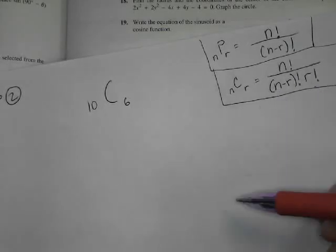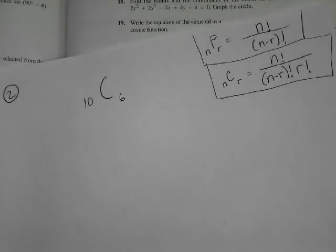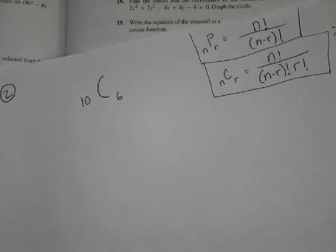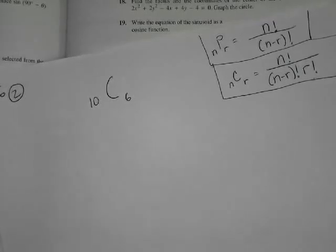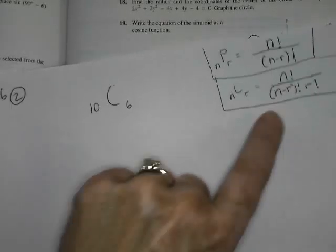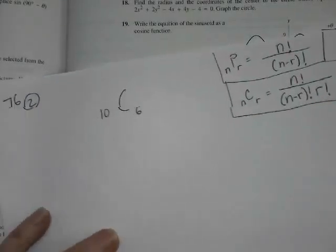But if I asked how many groups I would get, like when I'm talking about people, it doesn't matter. If I picked Cameron, Seth, and Rachel, that's not different than if I picked Rachel, Cameron, and Seth, right? They're all one group. So you use combinations. A lot of times it's when they're talking about groups of people.